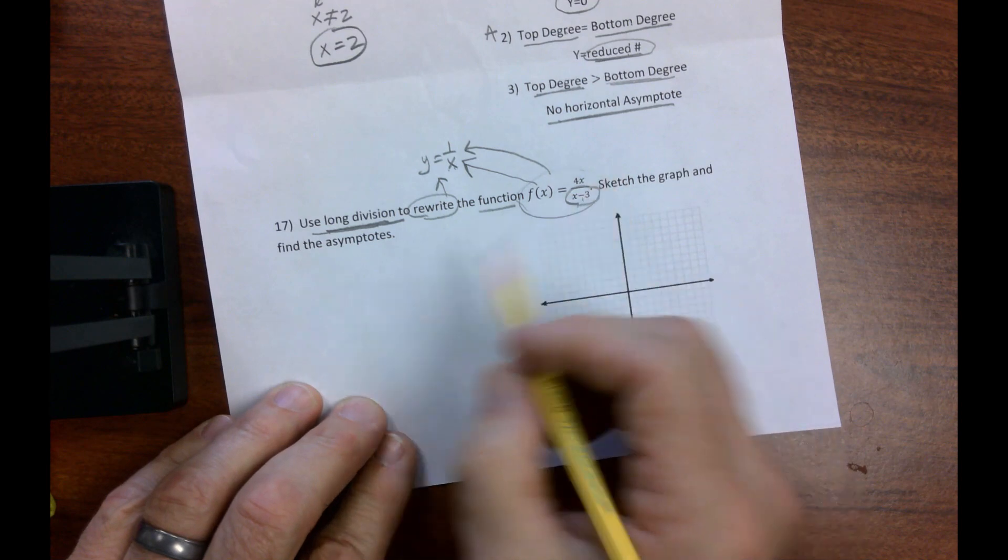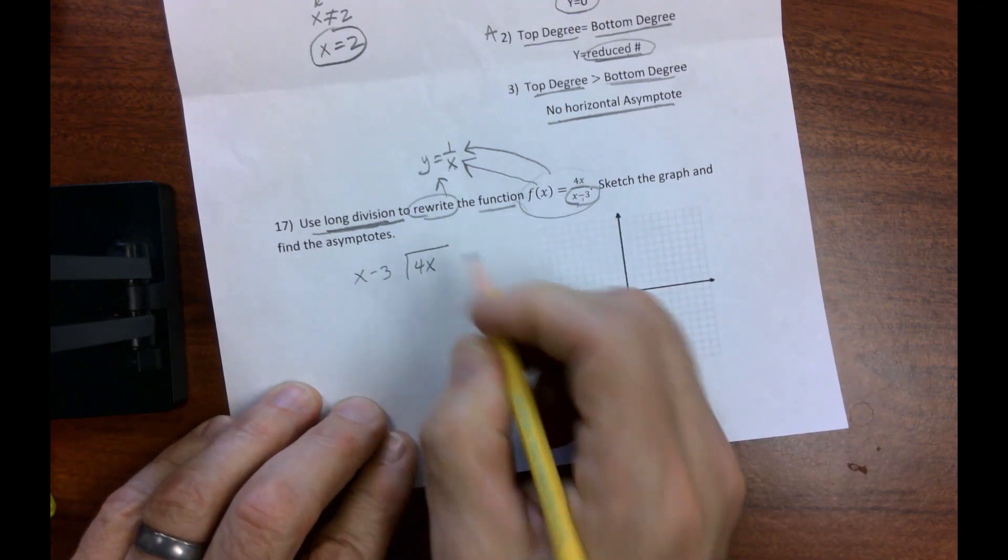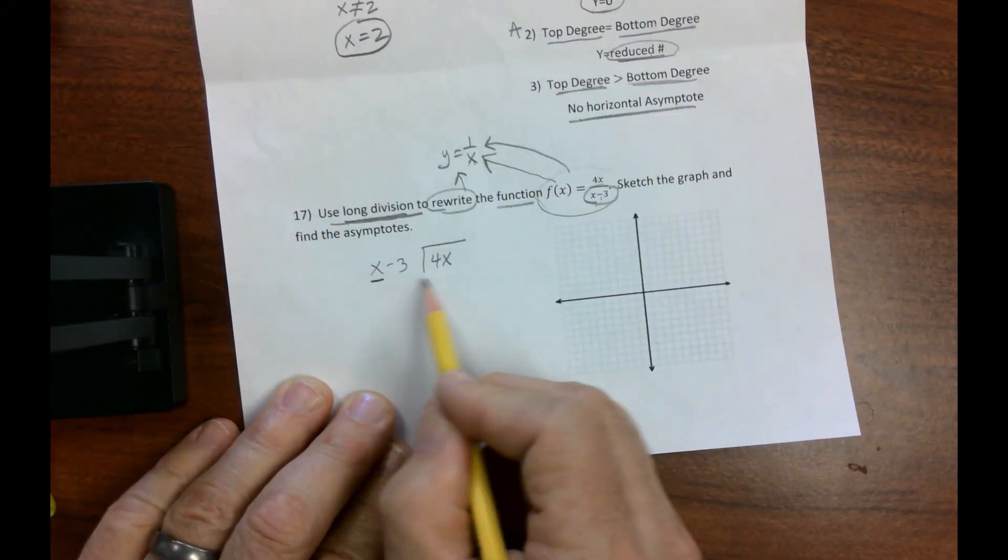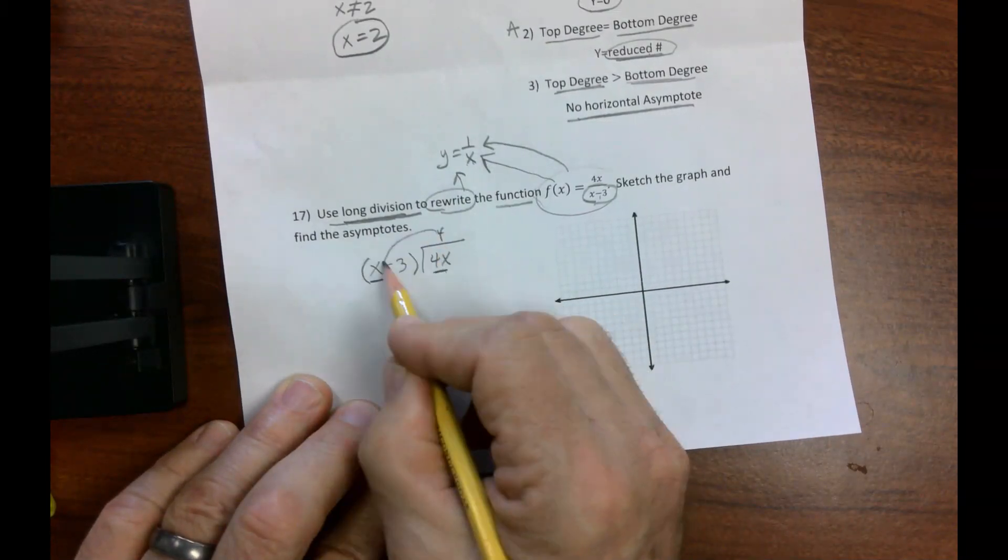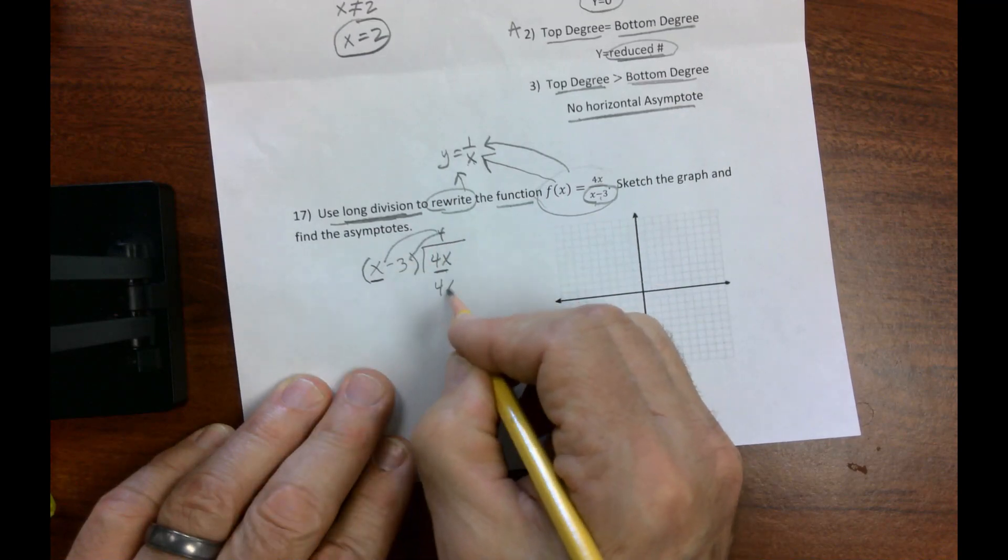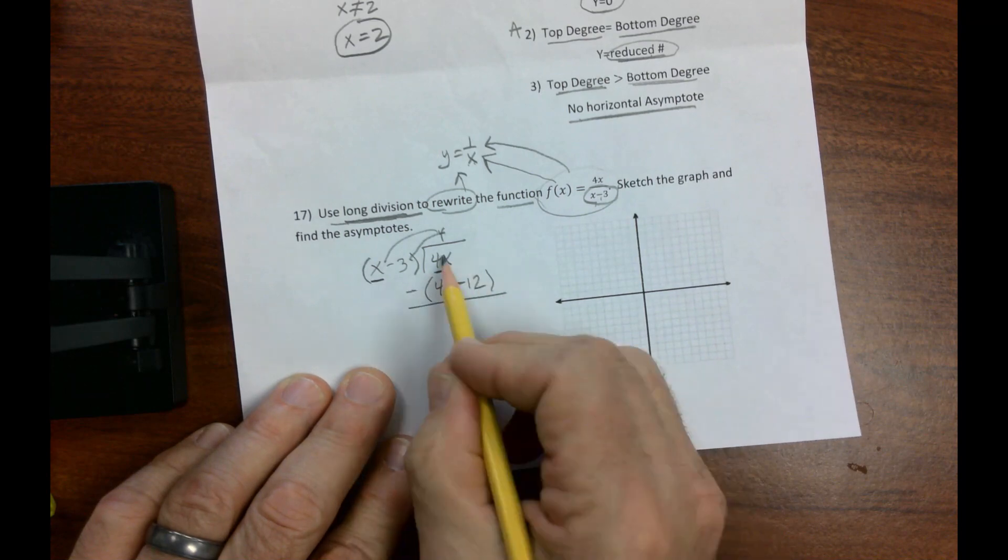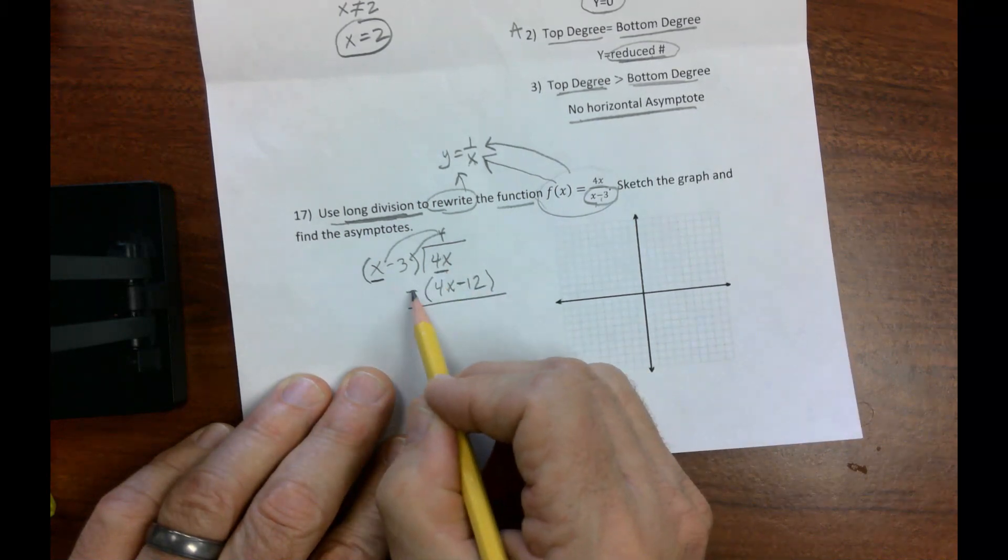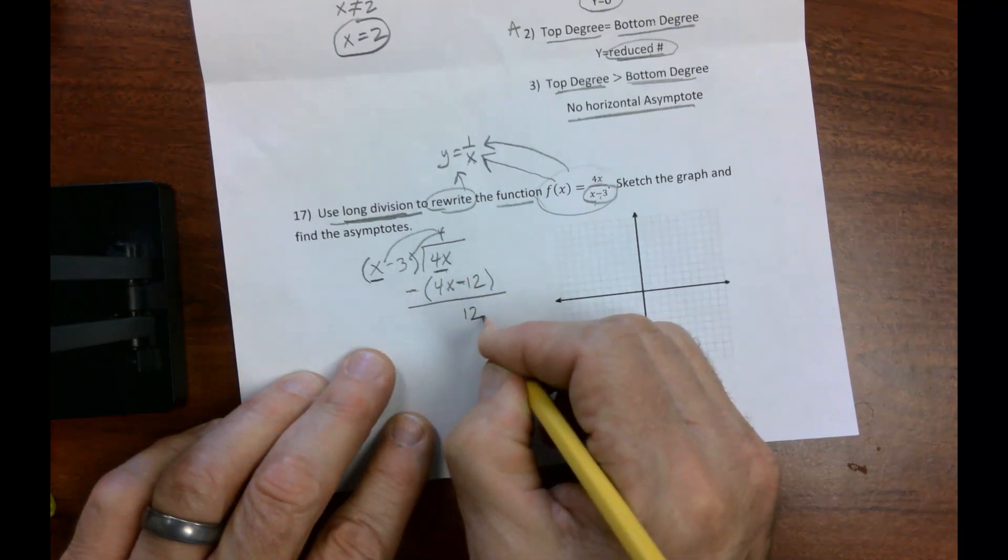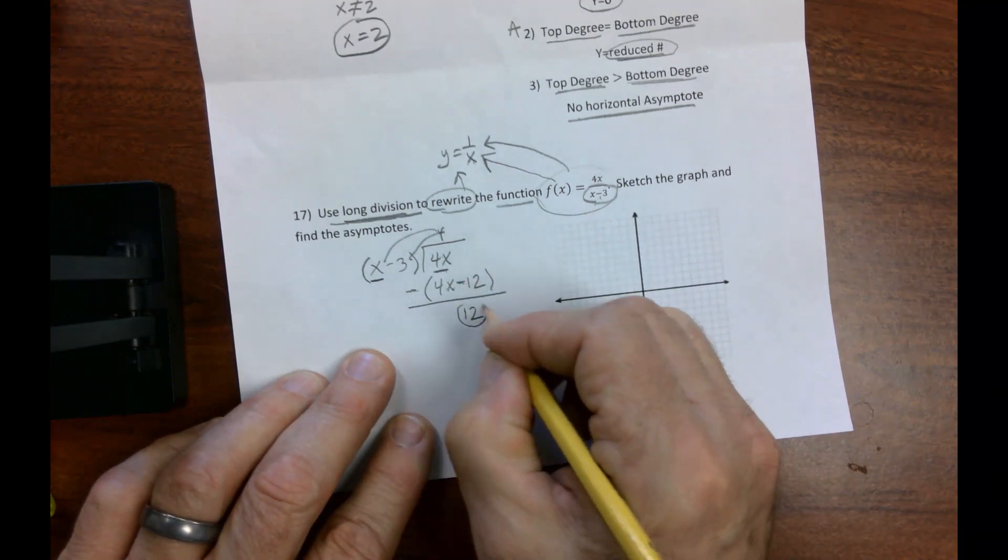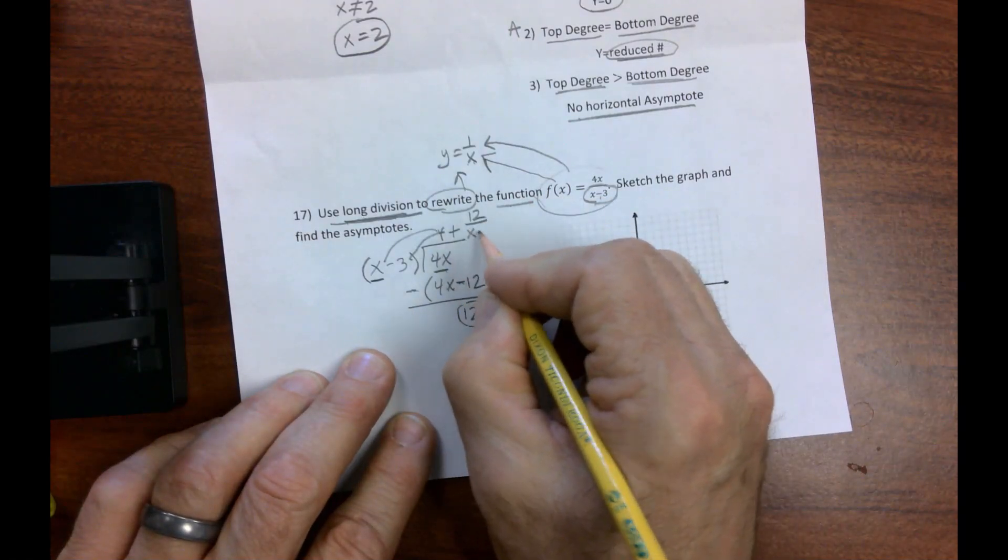It's like, okay, so that goes into that. We start with this. What times this gives us this? 4. But don't forget, you got to multiply by everything. So I get 4x minus 12. Another don't forget, don't forget to subtract all of it. This minus itself, gone. That negative hits that negative. A lot of students forget that little move and it's a 12. That means that's my remainder.